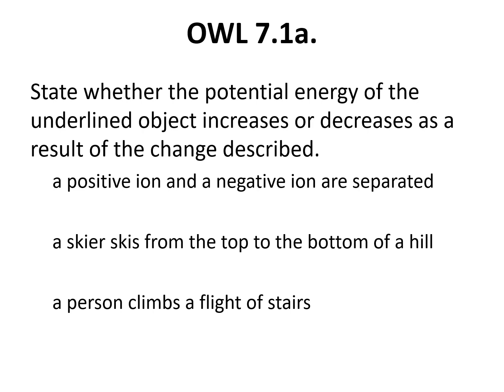To make sure we understand the basics of kinetic and potential energy, let's look at a few problems. Starting with a positive ion and a negative ion — if we pull them apart, because of their strong attraction for one another, the potential energy increases. A skier going from the top to the bottom of a hill goes from high to low potential energy, so potential energy decreases. A person climbing a flight of stairs goes from a low point to a high point, so their potential energy is increasing.